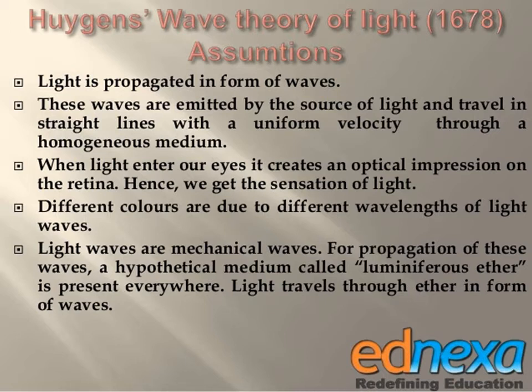These waves are emitted by the source of light and travel in a straight line with uniform velocity through a homogeneous medium. When light enters our eye, it creates optical impressions on the retina, hence we get the sensation of light. Huygens suggested that different colors correspond to different wavelengths of light, and that light waves are mechanical waves. For propagation of these waves, a hypothetical medium called luminiferous ether is present everywhere.